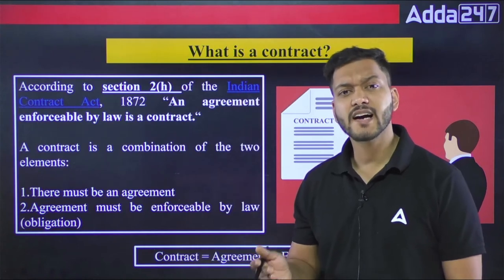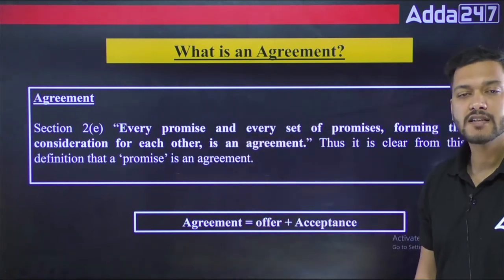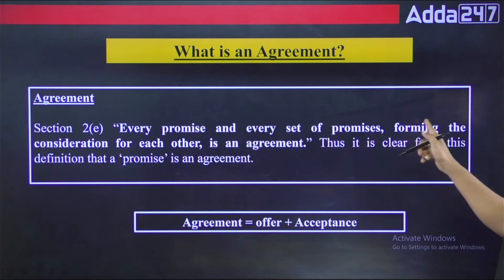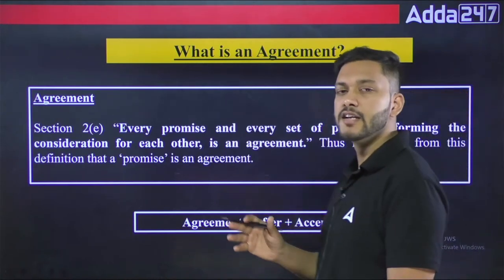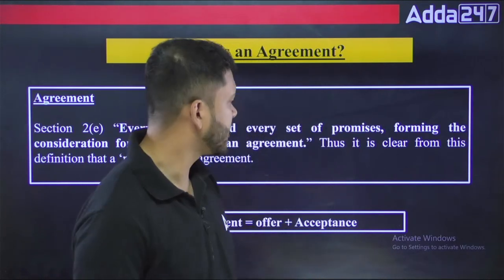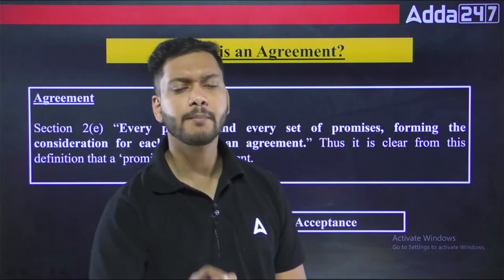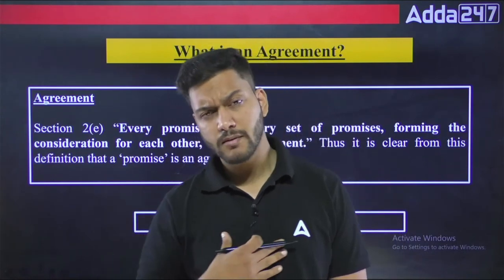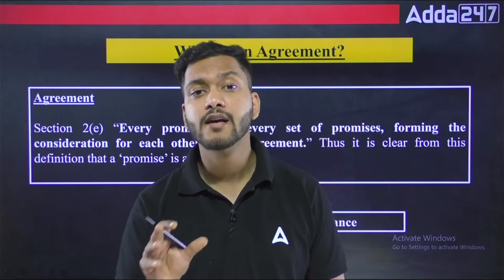Now, Section 2h talks about 'agreement.' What is an agreement? Every promise and every set of promises forming the consideration for each other is an agreement. Every set of promises where there is consideration will be known as an agreement. So the agreement consists of promises that involve consideration, offer, and acceptance.